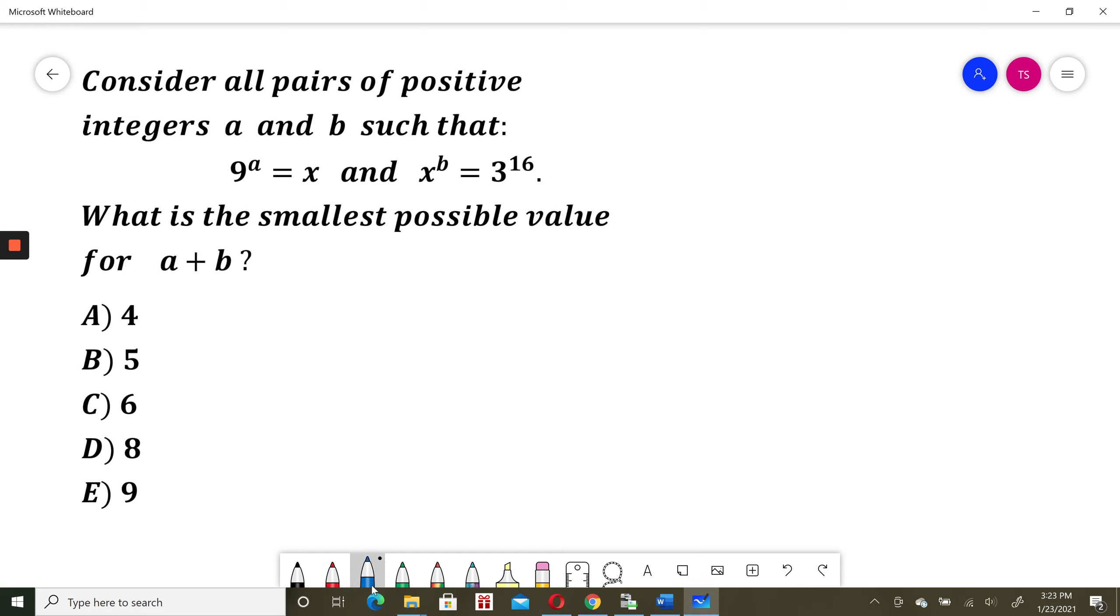Okay, I'll solve it now. I'll write first what we know. 9 to the power of a is x and x to the power of b equals 3 to the power of 16. I will call the first equation number 1 and second equation number 2.